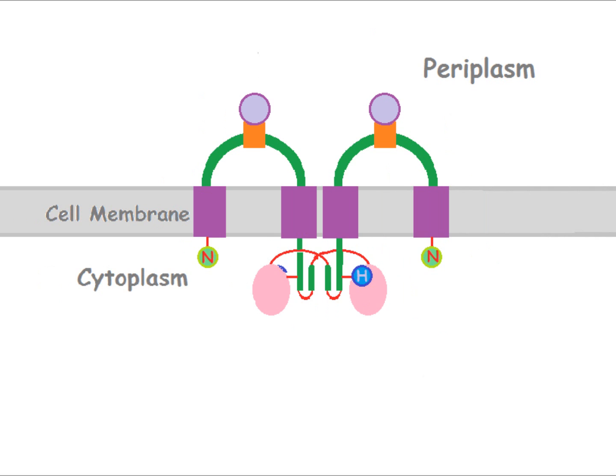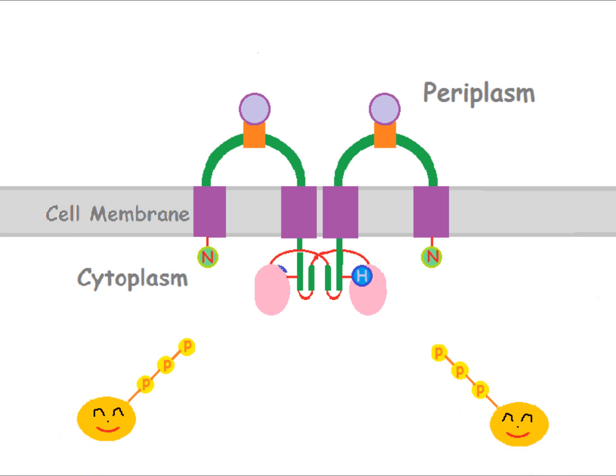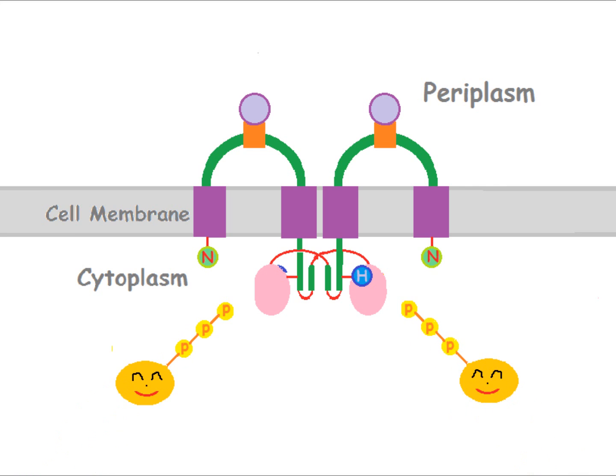When this occurs, the catalytic domain of one histidine kinase catalyzes the phosphorylation of the histidine residue on the other, and vice versa. The phosphoryl group is donated by ATP.